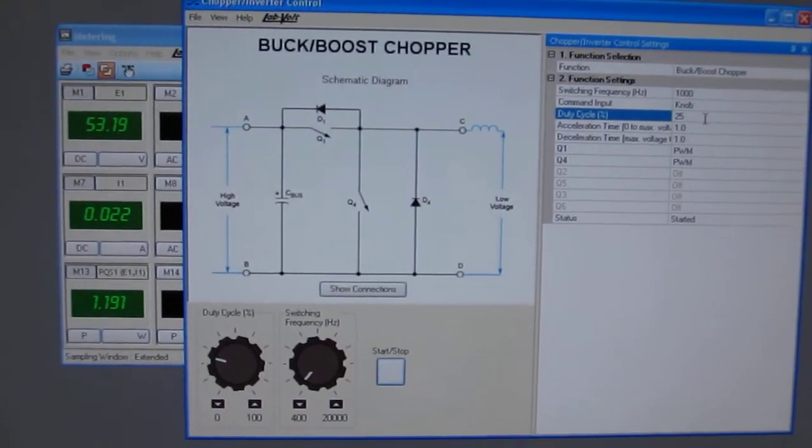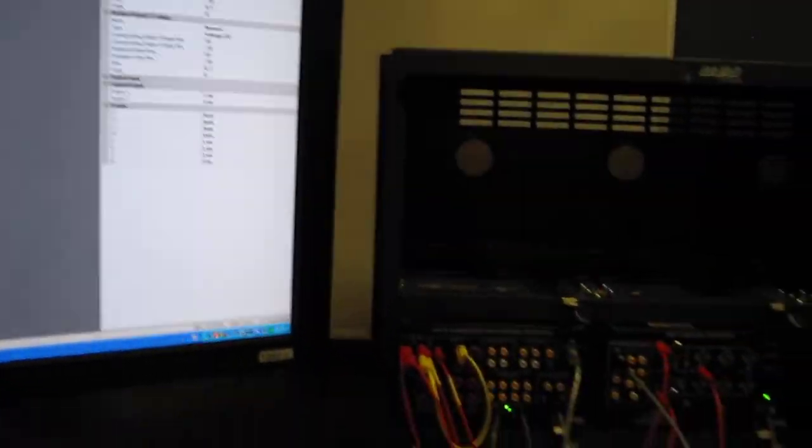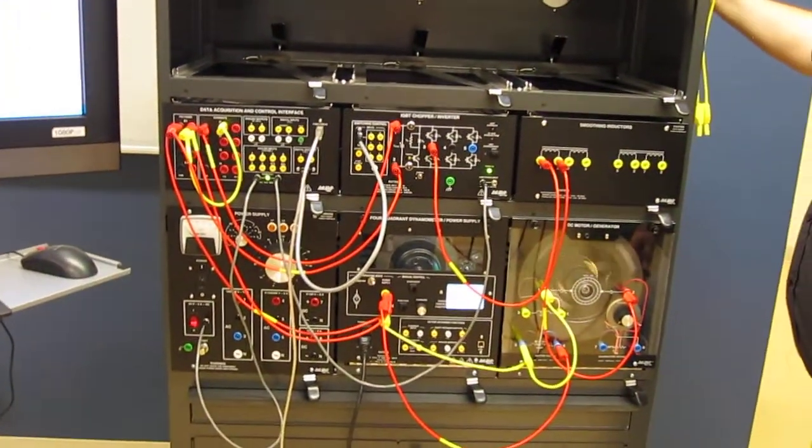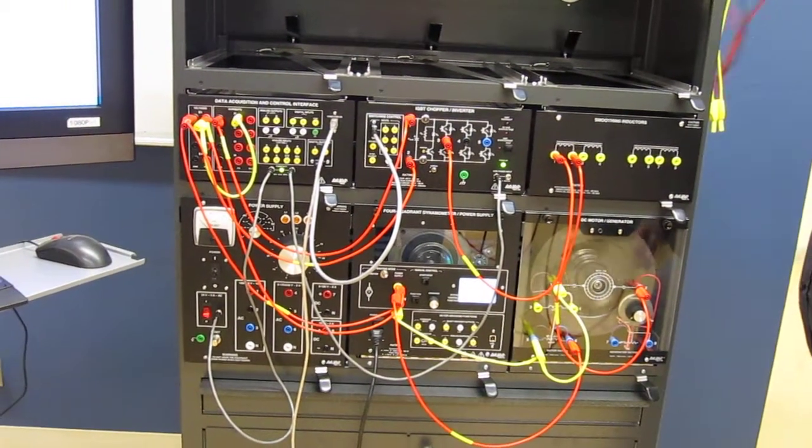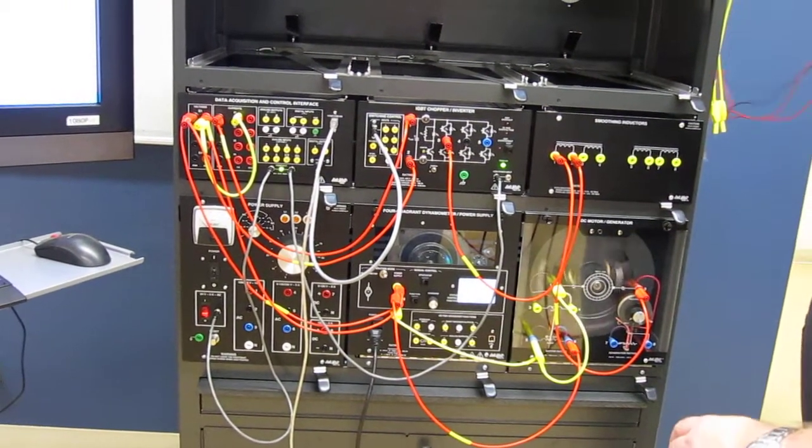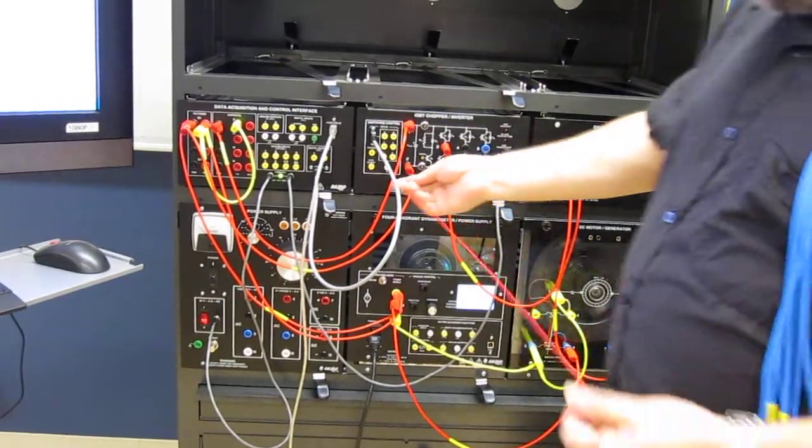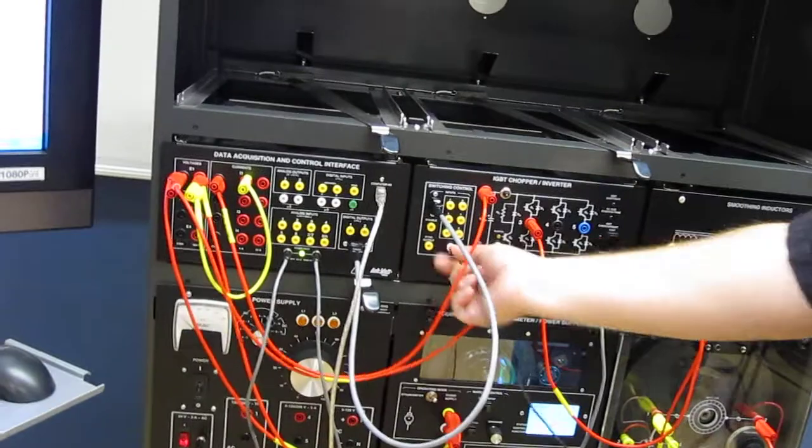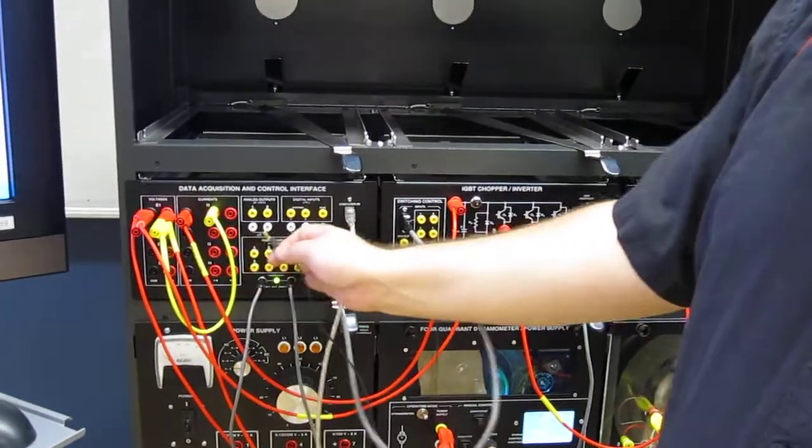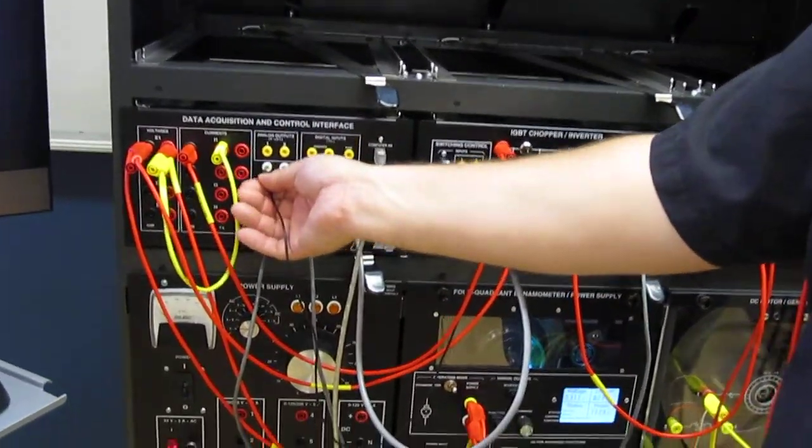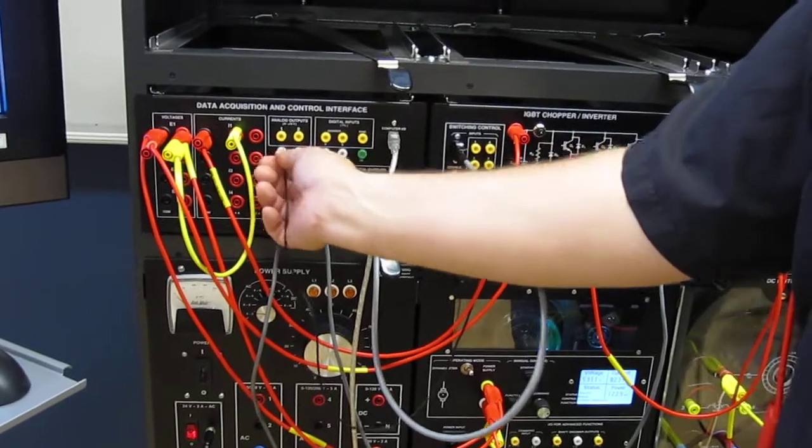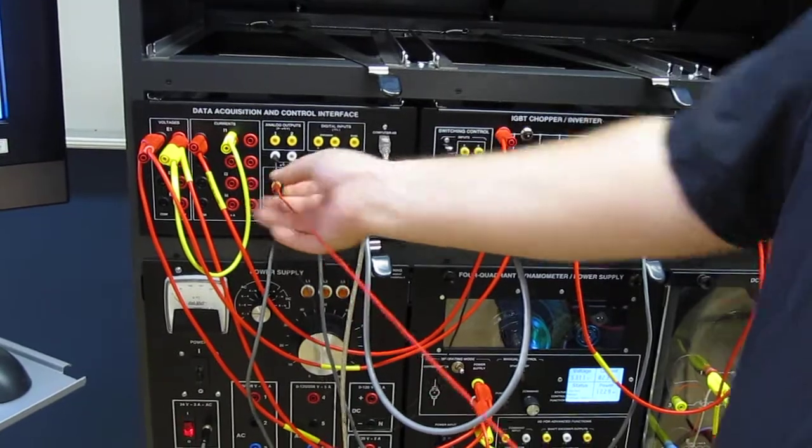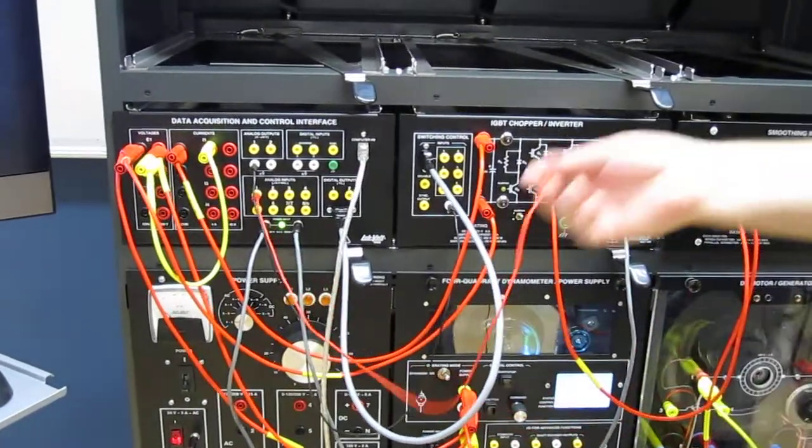If on top of that I also want to show the switching signals, I will need to connect the ground with the ground of the data acquisition inputs here. And as I connect input 1 to my transistor number 1 here.